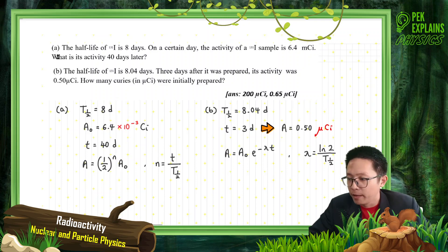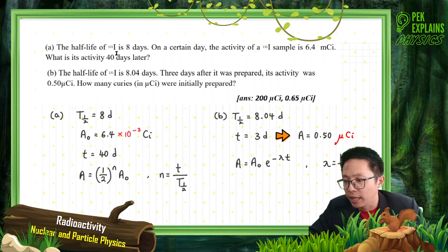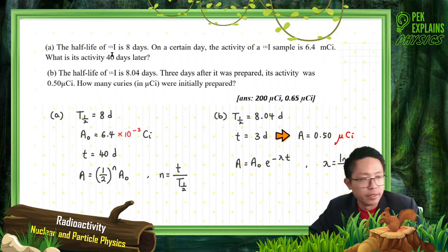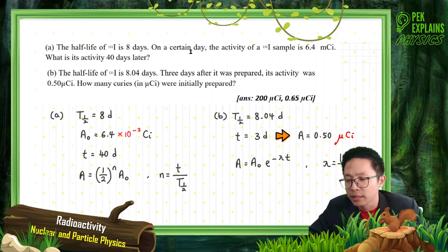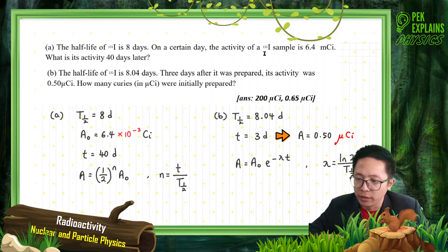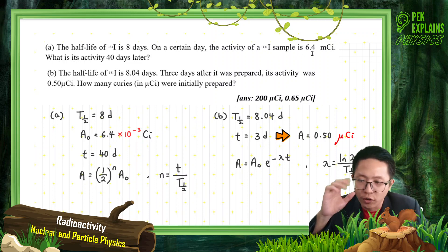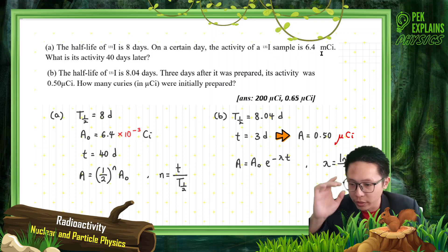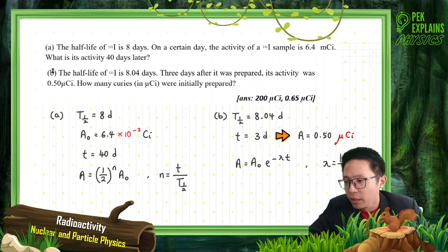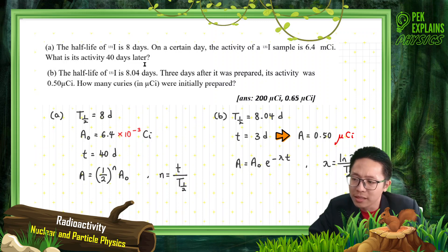Okay. Question A: the half-life of an iodine isotope — this is a radioisotope — is 8 days. On a certain day, the activity of the iodine sample is 6.4 millicurie. What is its activity 40 days later?